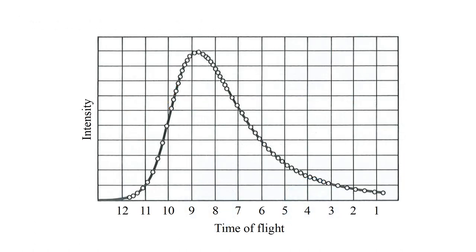Here are the results of the experiment. On the vertical axis, the intensity of atoms arriving at the detector increases from bottom to top. On the horizontal axis, velocity increases from left to right. The solid curve is the prediction of the Maxwell-Boltzmann distribution. The circles are the observed distribution. The agreement is excellent. This is another striking confirmation of the validity of our model and statistical mechanics analysis.